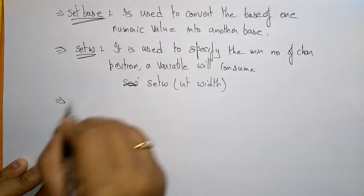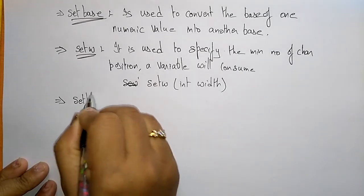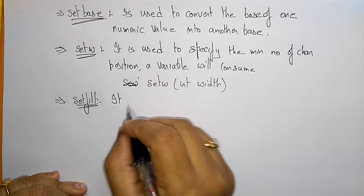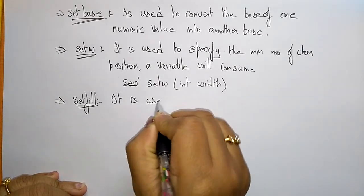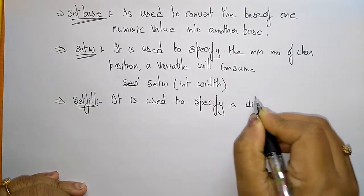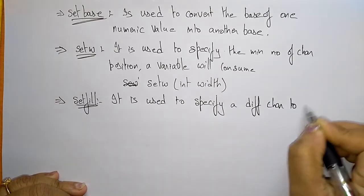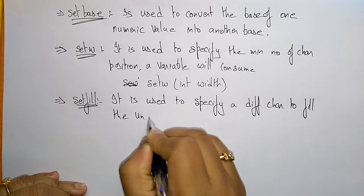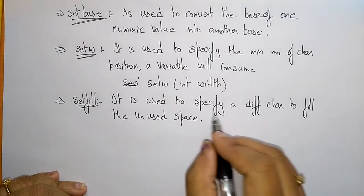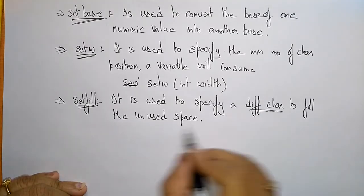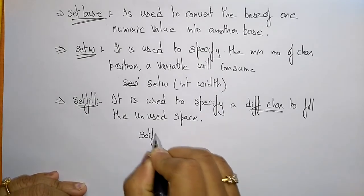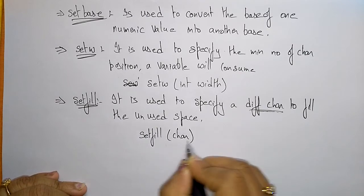Now coming to setfill. The setfill manipulator is used to specify a different character to fill the unused space. The syntax for setfill is setfill(char c), where you specify the fill character.